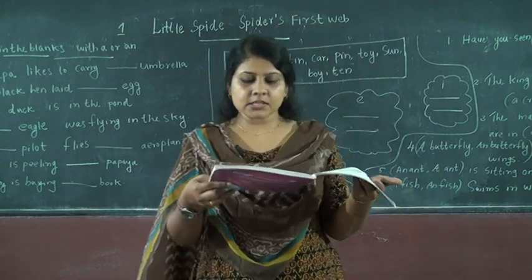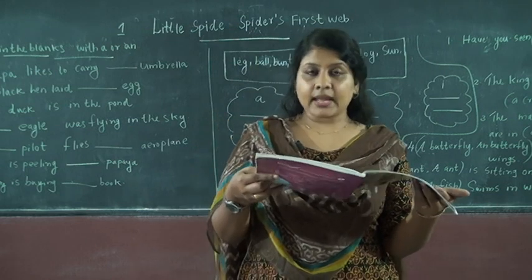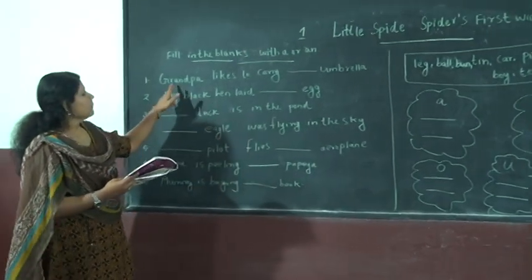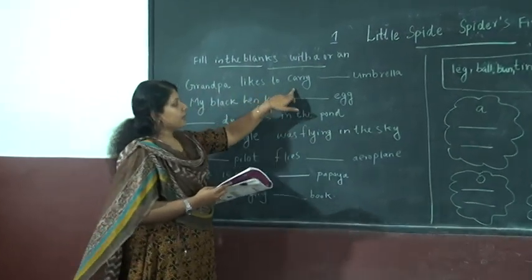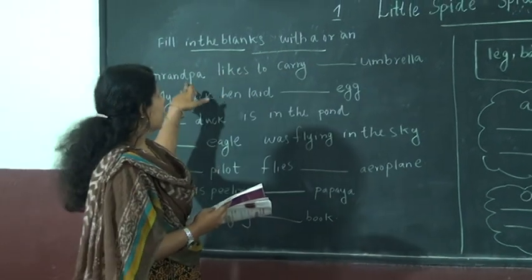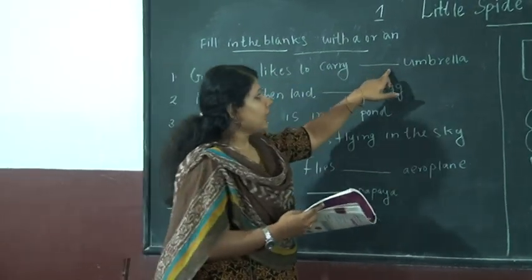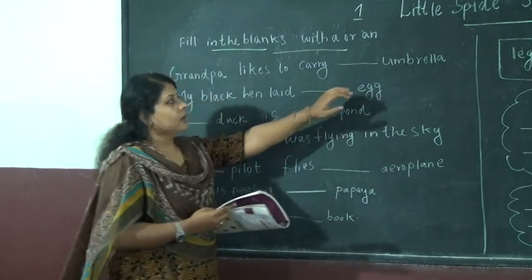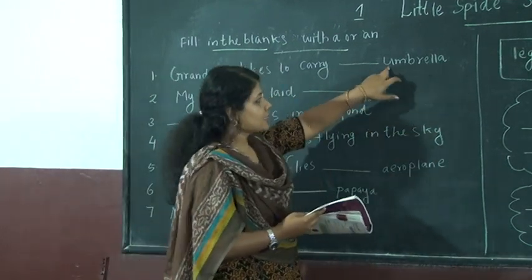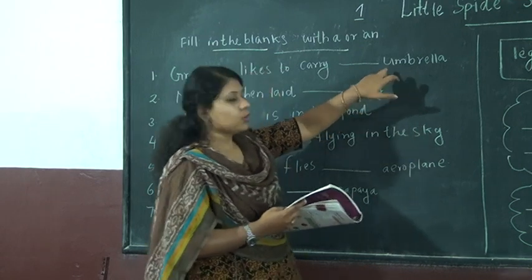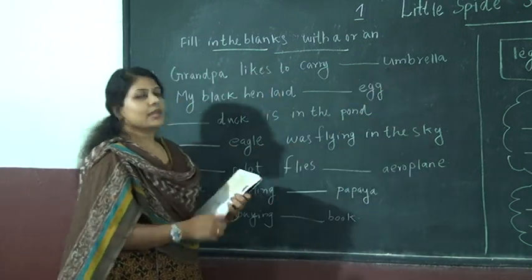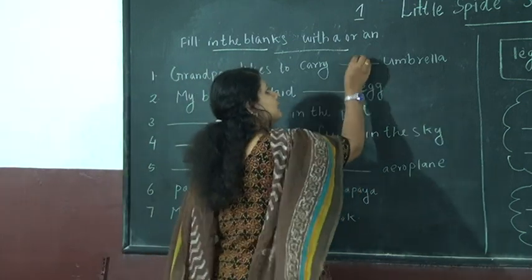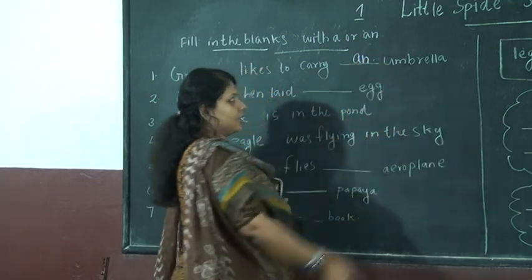The first exercise: fill in the blanks with A or AN. There are 8 sentences here. First sentence: Grandpa likes to carry dash umbrella. The word is umbrella. The first letter of umbrella is U. U is a vowel, so we can use AN. AN umbrella.